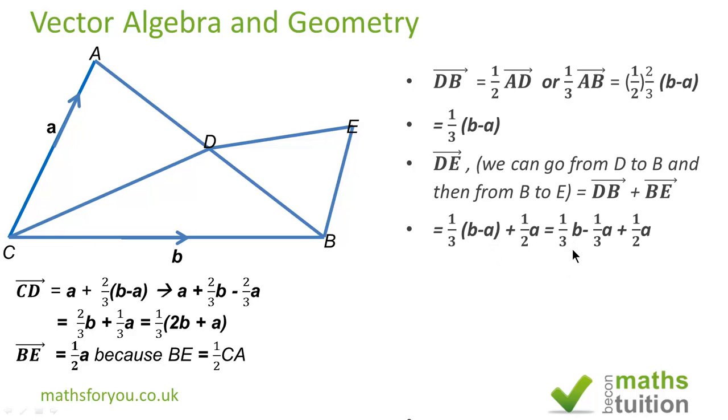Expanding the brackets we have a third b minus a third a plus half a. Using our knowledge of lowest common multiple, the lowest common multiple of 3 and 2 is 6, so we end up with 2 sixths of b minus 2 sixths of a plus 3 sixths of a. When you simplify and factorize that becomes 1 sixth of (2b plus a).